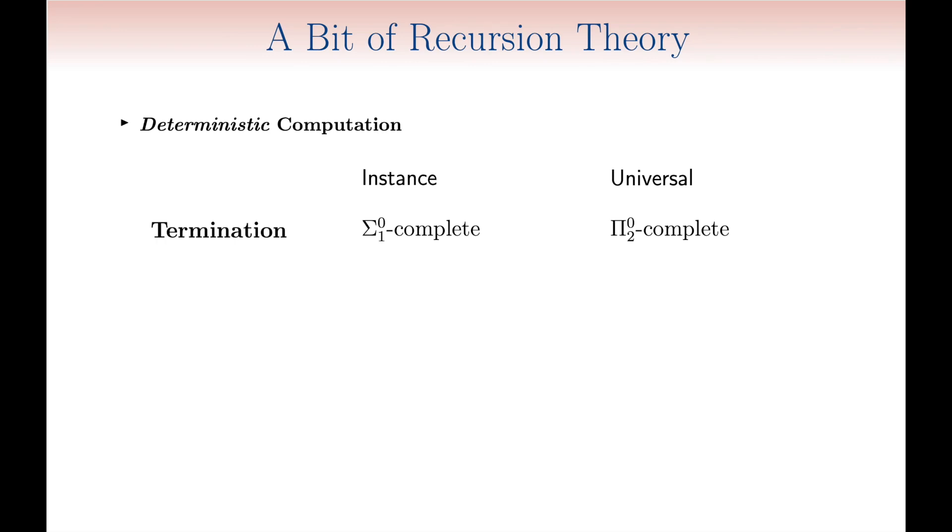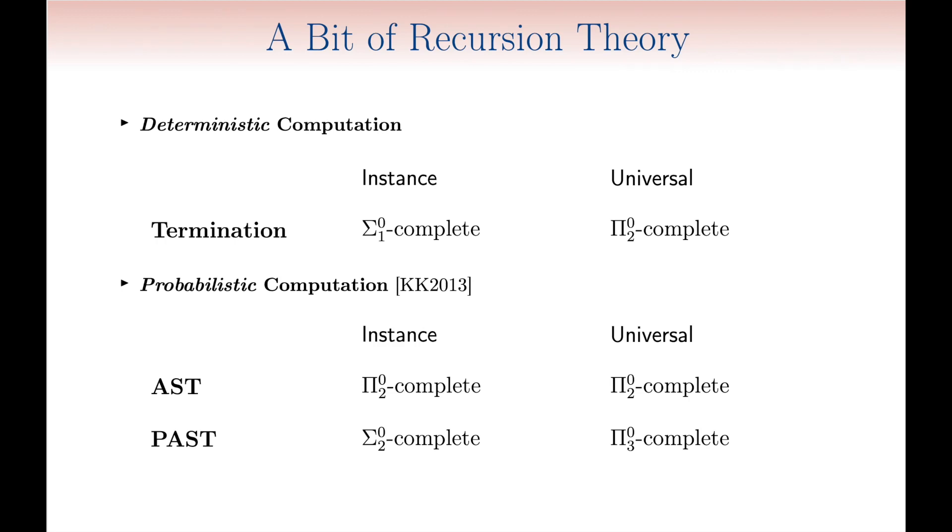How hard is it to check programs terminating? In the realm of deterministic programs, termination is well known to be recursively enumerable when spelled out for computations, and sigma-02 complete in the case of functions.